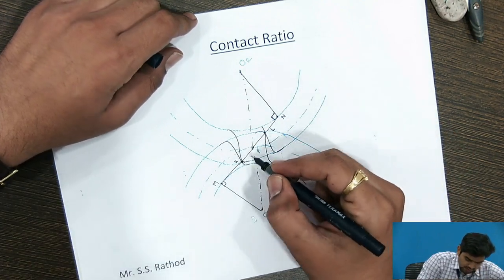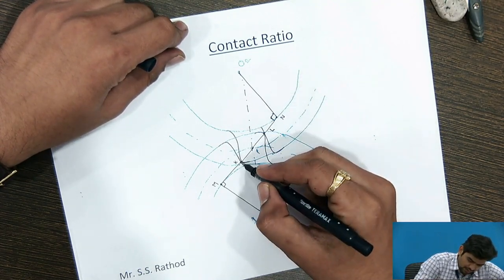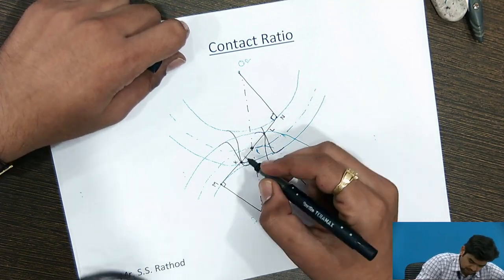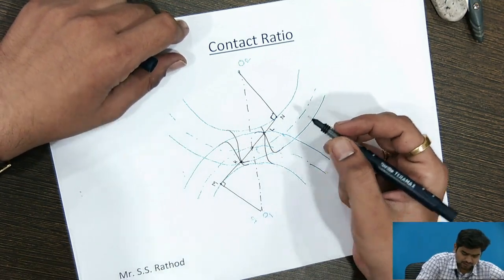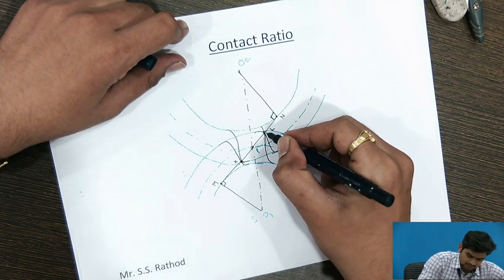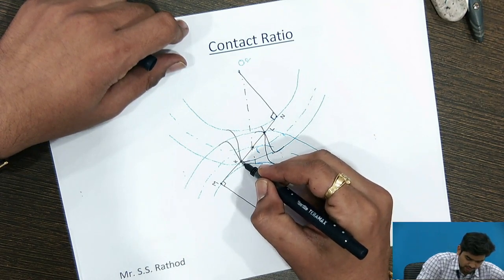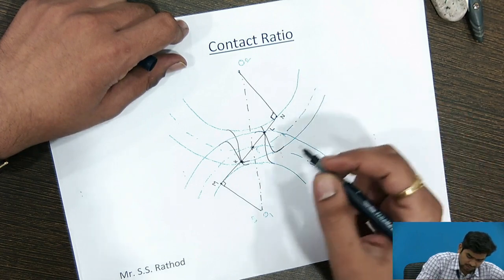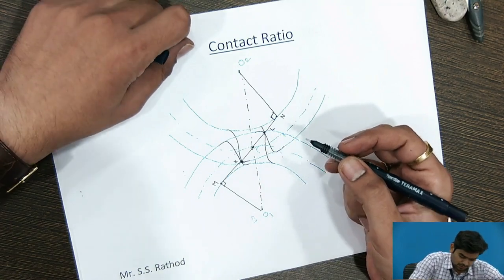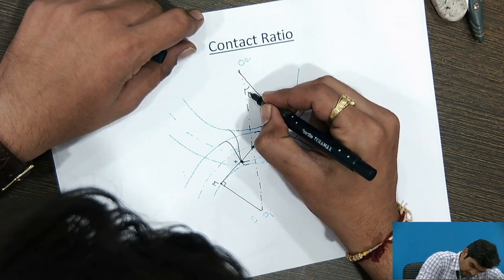KPL is the length of path of contact, which is the length cut along the common normal from the addendum circles of the gear and pinion. The engagement of the tooth occurs from K to L (the disengagement point). KPL has two segments: KP, called the length of path of approach, and PL, called the length of path of recess. The angle indicated by the letter phi is the pressure angle.